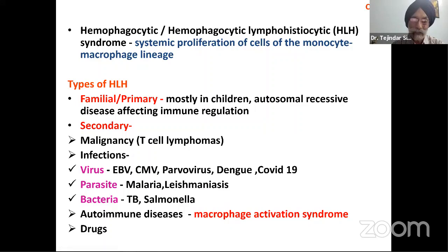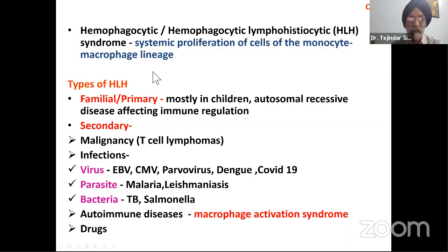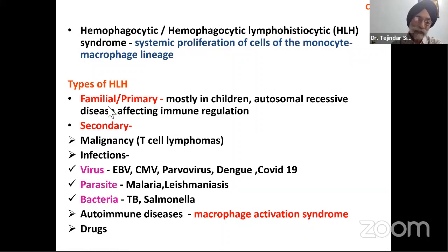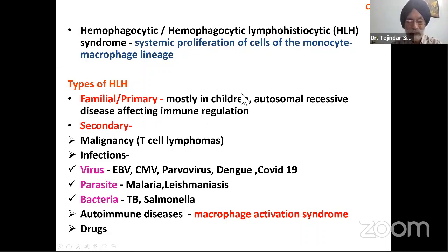The child has liver and spleen palpable, cytopenias are present. HLH is hemophagocytic lymphohistiocytosis — a syndrome with systemic proliferation of cells of the mononuclear system. It is basically of two types: familial and secondary. Secondary is very common; in our country, the majority of cases are secondary. Familial cases run in families, seen in children, are autosomal recessive, and are seen mainly in some European countries like Sweden. However, a few cases are seen in India, and Dr. Chatterjee had shown two cases diagnosed on the basis of NGS.